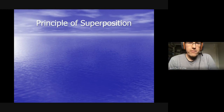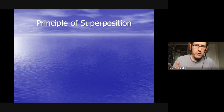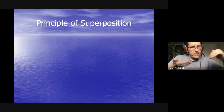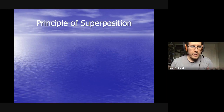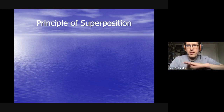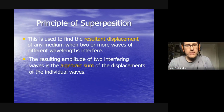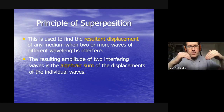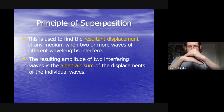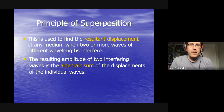This leads to the principle of superposition, which is a general rule about what happens when two waves meet. If the waves are the exact same size they cancel each other out momentarily and you get a node — but waves won't always have the same wavelength or shape. The principle of superposition tells us how to add together any two waves.